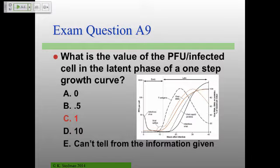Why is there one PFU per cell in the latent phase? All of the cells are infected — how do you get PFUs? The plaque comes from a plaque assay. You take a sample, mix it together with a mass excess of host cells, and do a plaque assay. Each of the infected cells will produce a plaque. So each infected cell is producing a plaque; anything beyond that is actual extra virus production.